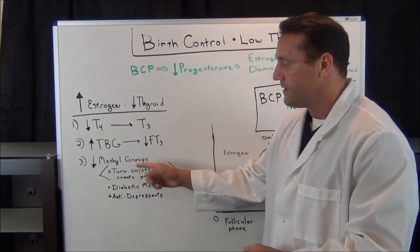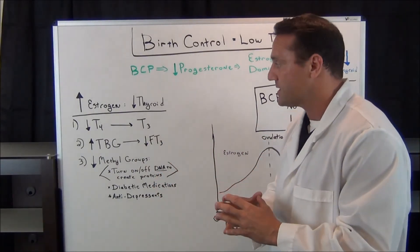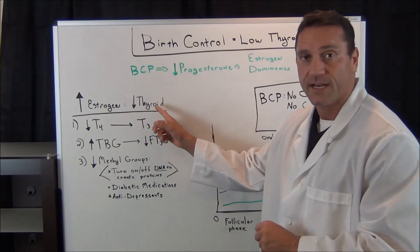So when you're estrogen dominant, you decrease the methyl groups. So at the cellular level, you're slowing down how the body works at the cellular level. So this is where you're going to decrease thyroid function.